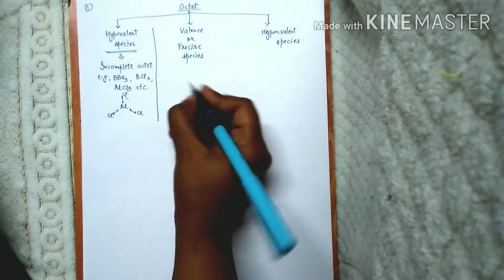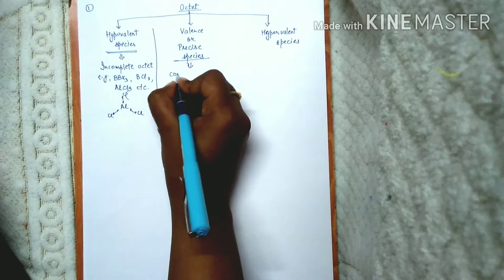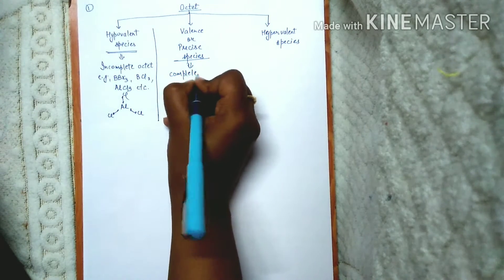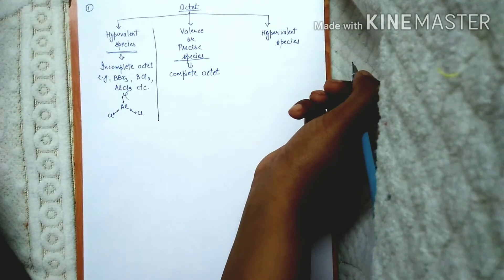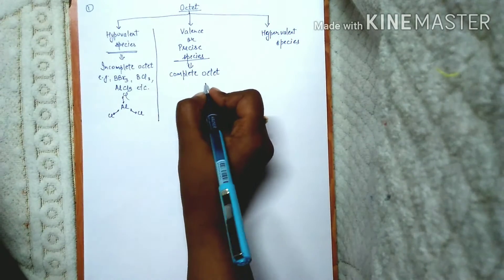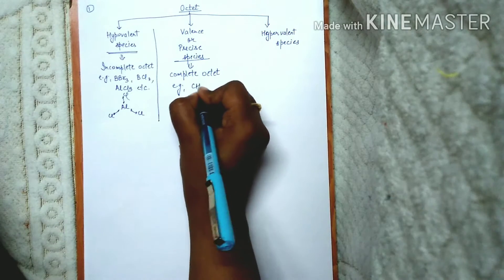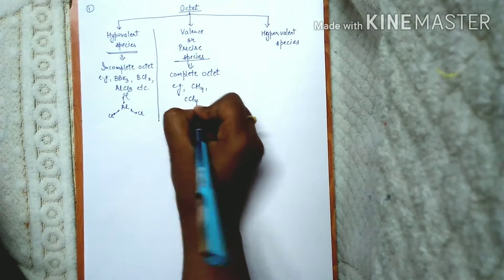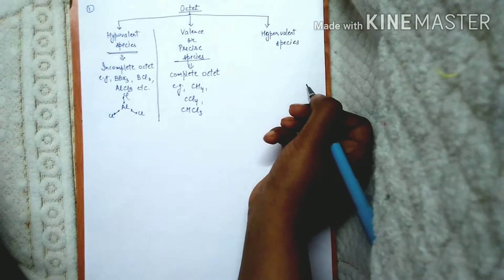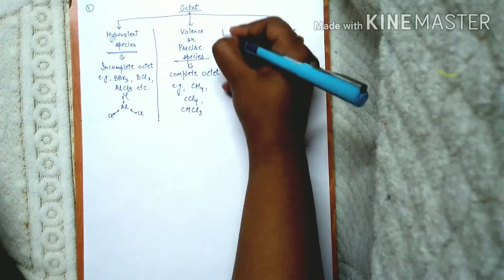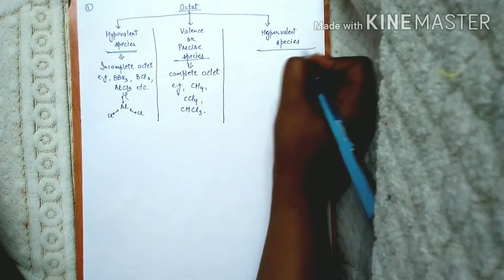Valent or precise species are those in which there is a complete octet — that is, there are eight electrons in the valence shell, or two if required. For example, CH4, CCl4 (carbon tetrachloride), and CHCl3 (chloroform).